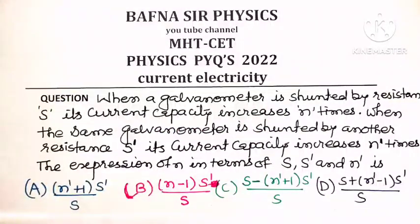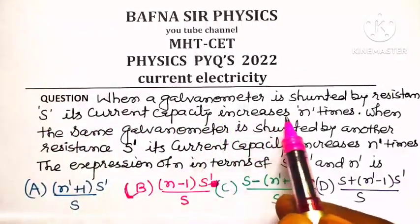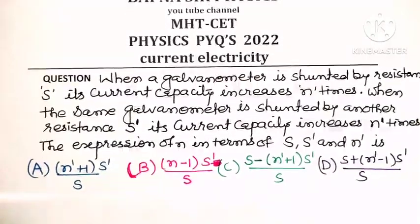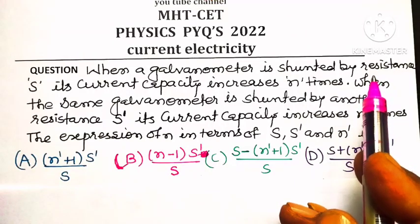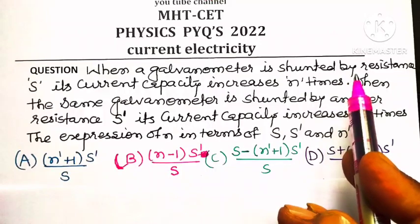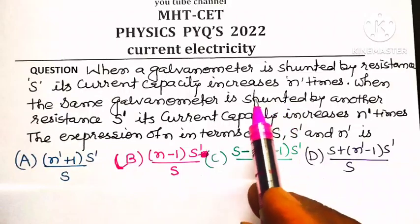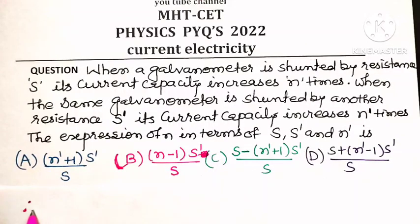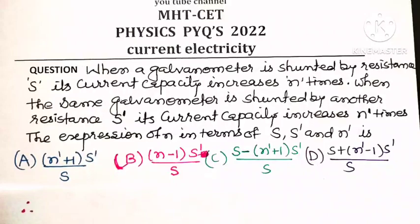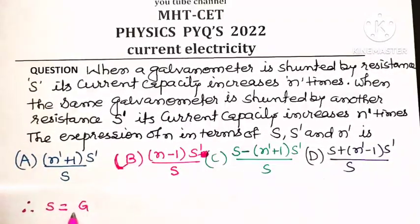When a galvanometer is shunted by a resistance S, its current capacity increases n times. Current capacity increases n times means the galvanometer is being used as an ammeter. When the galvanometer is used as an ammeter, its current capacity increases n times, so the new range becomes n times the original range. Therefore, the shunt required to increase the range n times is S = G/(n - 1).